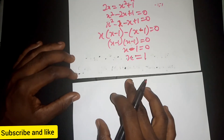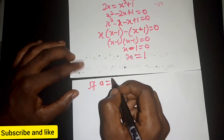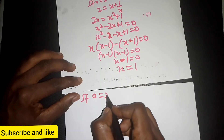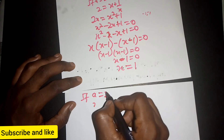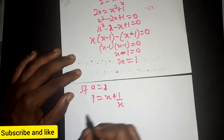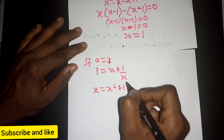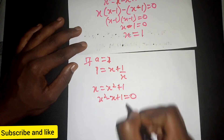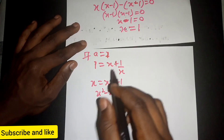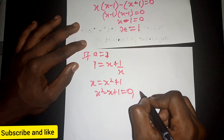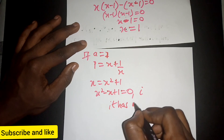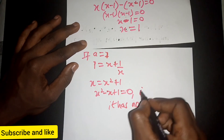Now for a equals 1: 1 equals s plus 1 over s. Multiplying through by s gives s squared minus s plus 1 equals 0. Two values that multiply to give 1 and add to give negative 1 — this is not possible with real numbers. We get imaginary values, which means this case has no real solution.